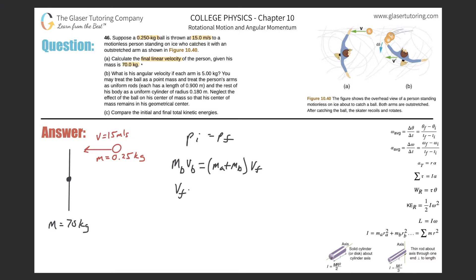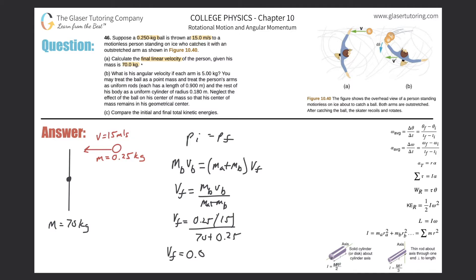Solving for final velocity: v_f equals m_b times v_b, all divided by (m_a plus m_b). Plugging in: mass of ball is 0.25, velocity is 15, mass of person is 70, mass of ball is 0.25. So v_f equals (0.25 × 15) divided by (70 + 0.25), which gives approximately 0.0534 meters per second.